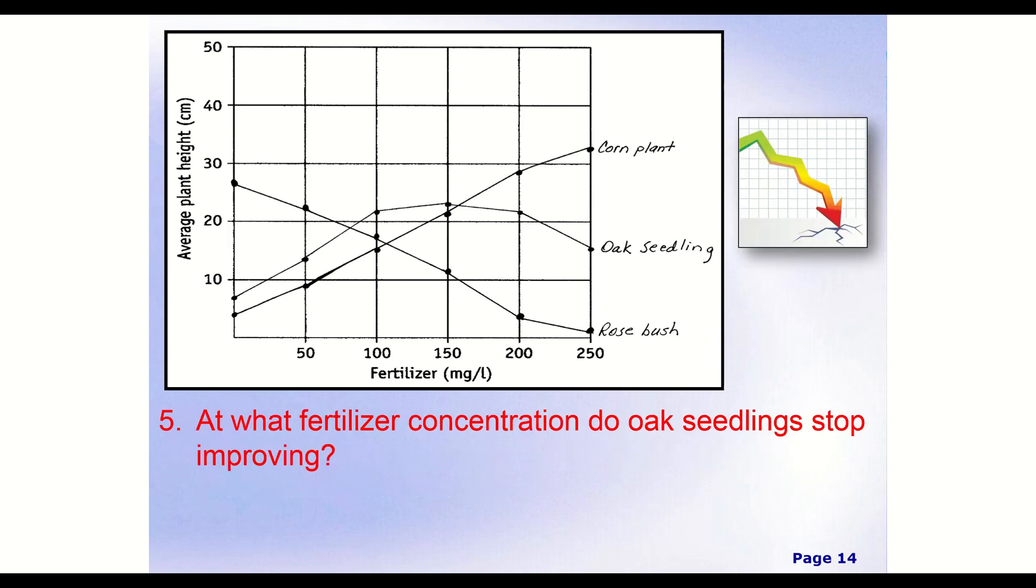All right, and so now our next question, so now that we've interpreted each one of our lines, we've got to now apply that a little bit and find out some more details that maybe could be helpful. So at what fertilizer concentration do oak seedlings stop improving? So now we want to know, so we're looking again just at our oak seedlings. And we want to know at what point does it stop helping us? So again, we're looking at this line right here. And if we're looking at that, at what point does it stop helping us? I would say that it stops helping us right around this point. I mean, we clearly tell that it's not helping us there. However, it's already decreased at that point. So it's also safe to say that it actually stopped us right here. It's no longer helping us after this point.